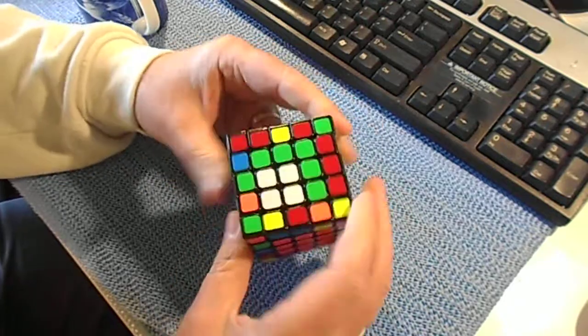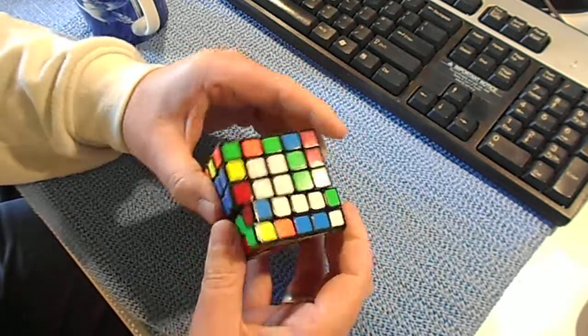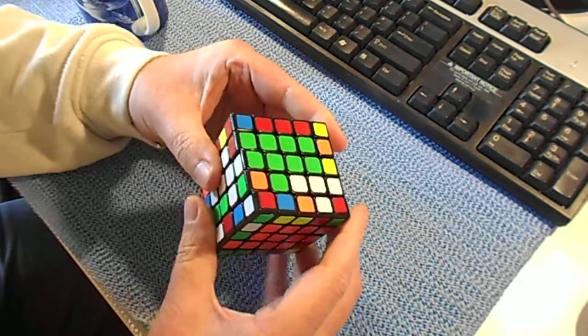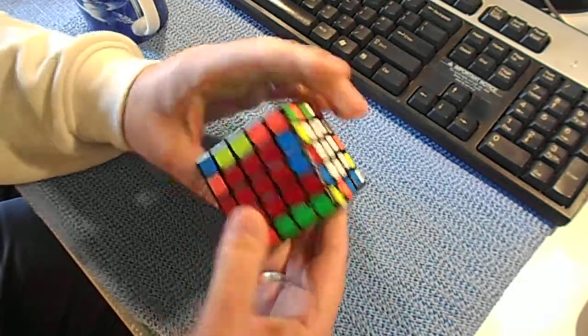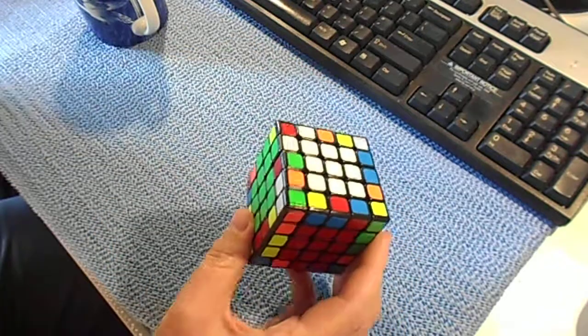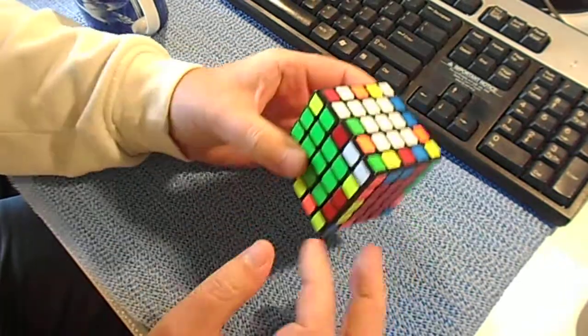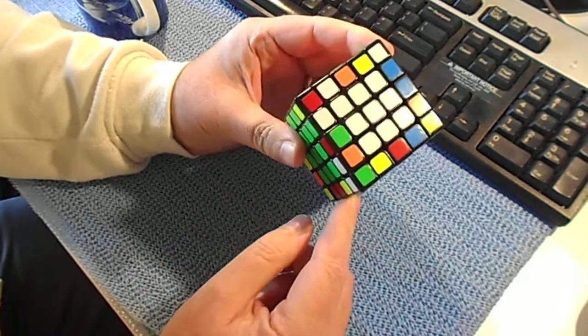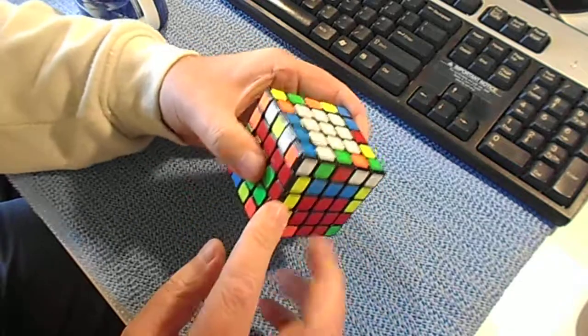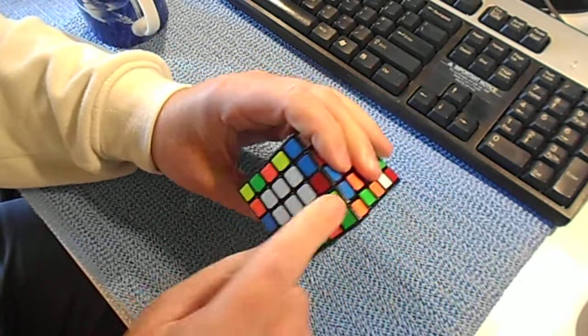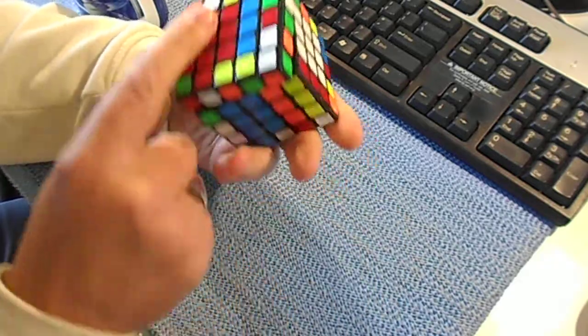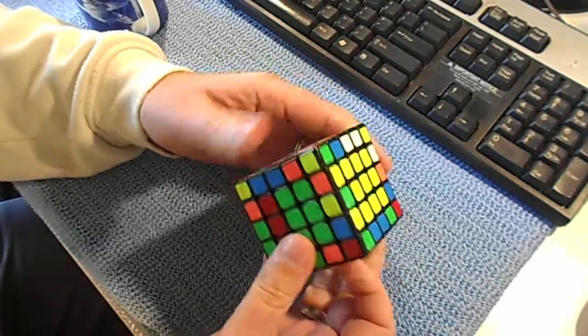Now for the last two. And done. I go to the edge pairing by using only yellows and whites. So I see here a solved piece, and when I put it in the upper layer, I replace it with one of the yellow or white ones. I see a blue one here. Here's another one.